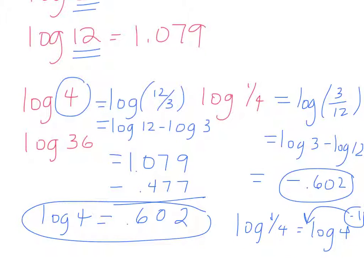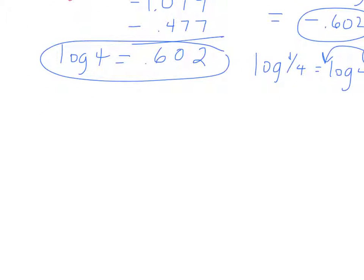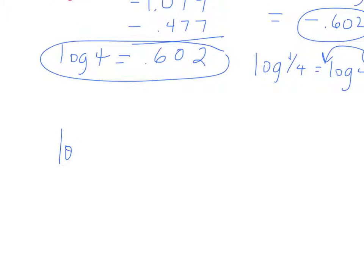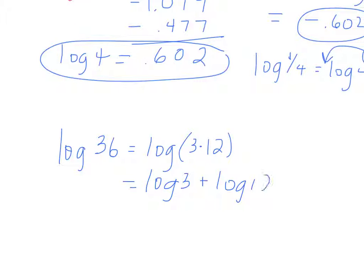This is how logarithms are all related. So what if I asked you log of 36? Log of 36, if you had 3 and 12, would be log of 3 times 12. So when I separate into two separate logarithms, it's log of 3 plus log of 12, which I gave you both of those values. So I said log of 3 was 0.477 and log of 12 was 1.079.